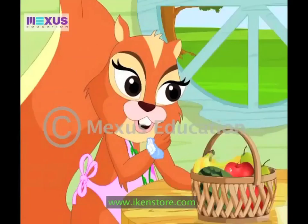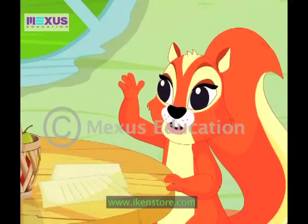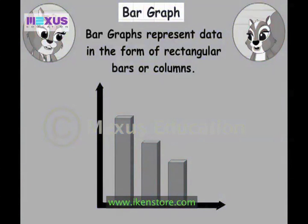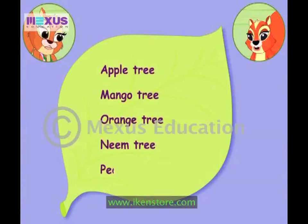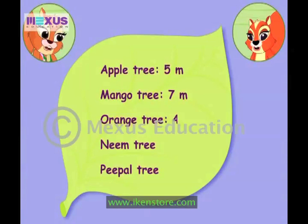How will we do that? We make a bar graph. A bar graph is a type of graph in which we show data in the form of rectangular bars or columns. So listen — we have apple trees, mango trees, orange trees, neem trees, and peeple trees in our forest. A mango tree is around 7 meters tall, an apple tree is around 5 meters, an orange tree is around 4 meters, a peeple tree is 8 meters tall, and a neem tree is around 7 meters.